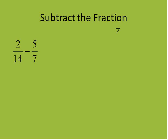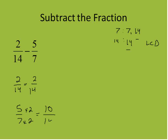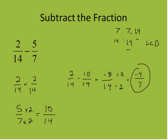Let's look at this one. Listing multiples of 7: 7, 14 — so our common denominator is 14. 2/14 stays as 2/14. For 5/7, I multiply both top and bottom by 2, giving me 10/14. So the question is 2/14 minus 10/14, and I'll end up with a negative answer because 2 minus 10 gives me negative 8, with denominator 14. Reducing by dividing both by 2: negative 8 divided by 2 is negative 4, and 14 divided by 2 is 7. The final answer is negative 4/7.